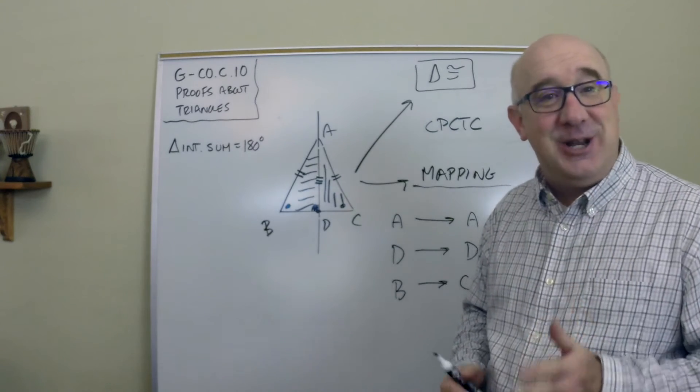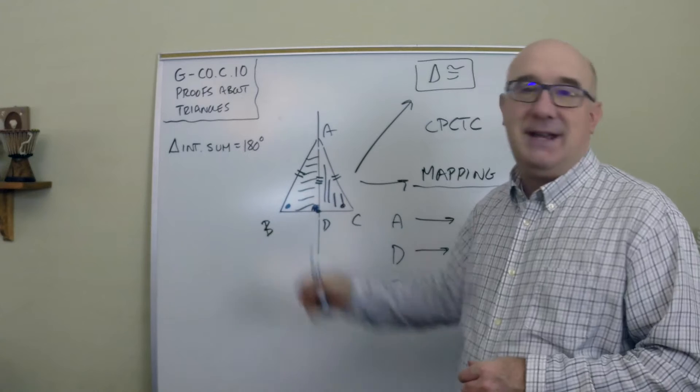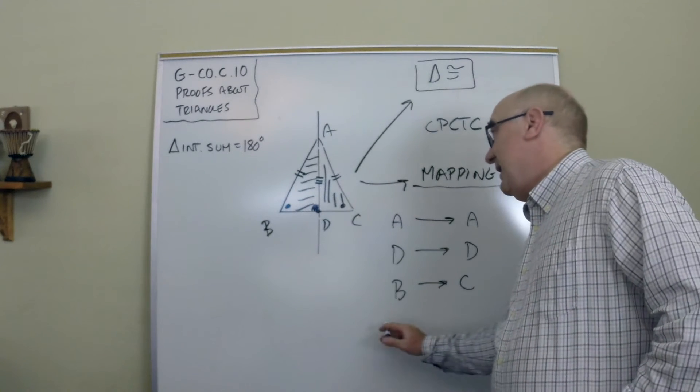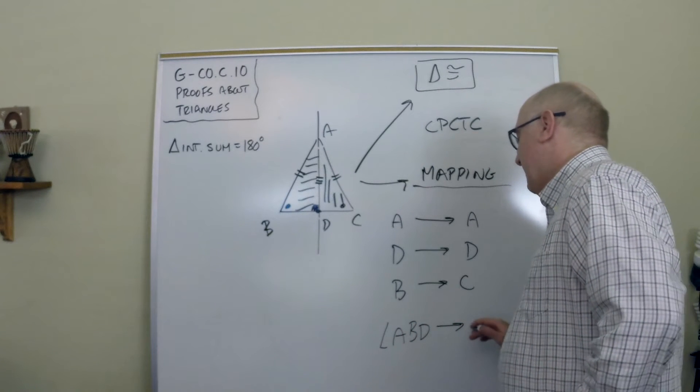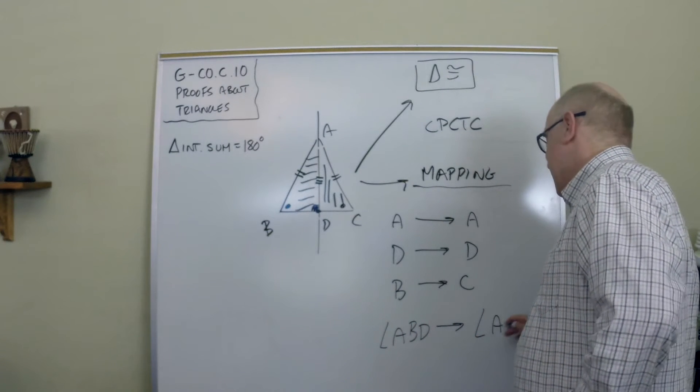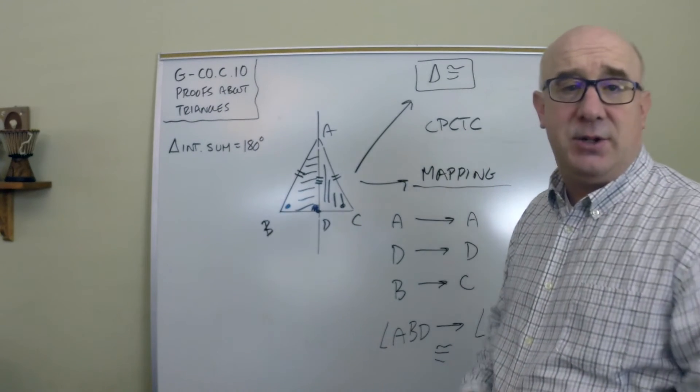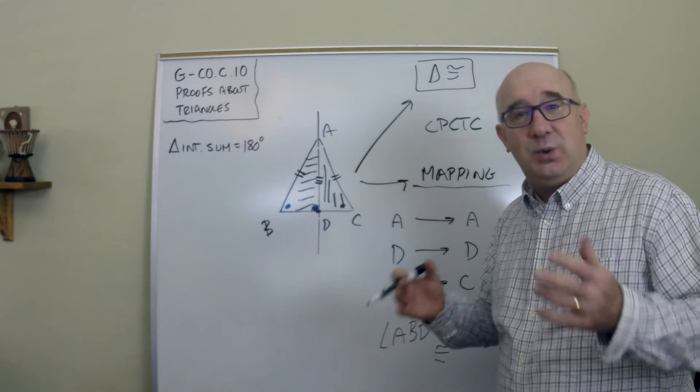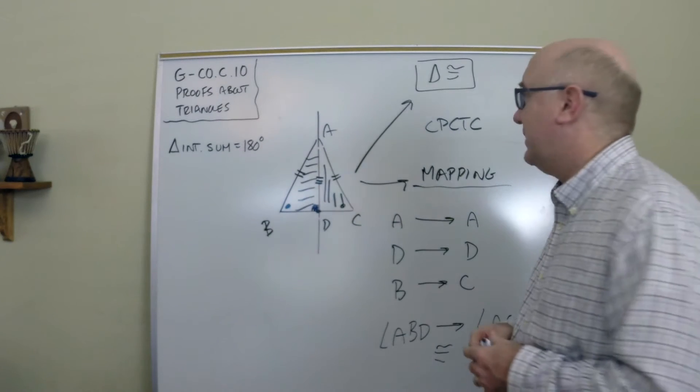And so, look, angle ABD would map onto angle ACD, thus making them congruent because a reflection is isomorphic and holds onto those properties of preserving angles and things like that.